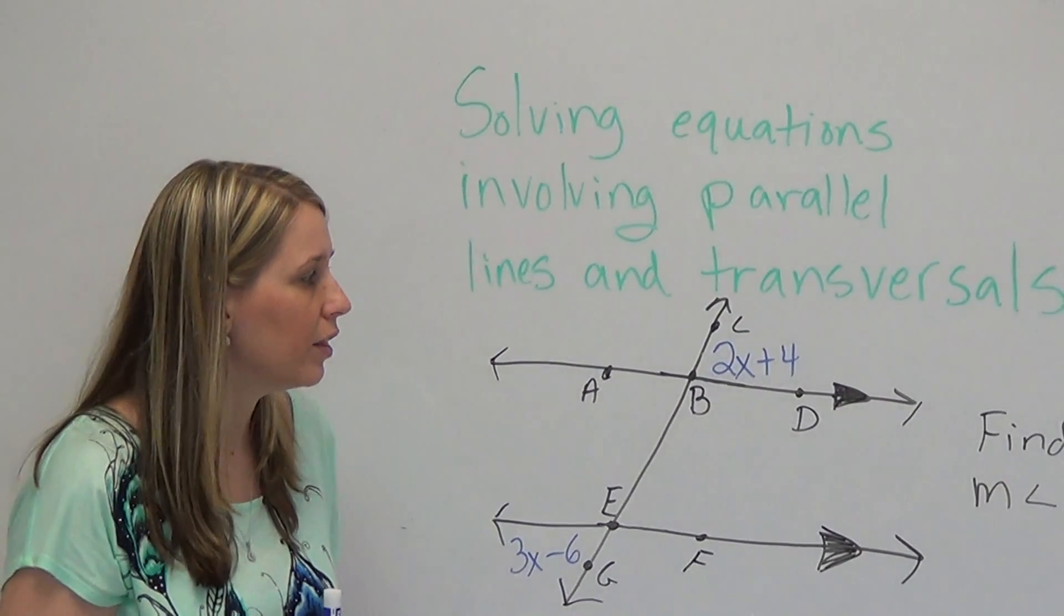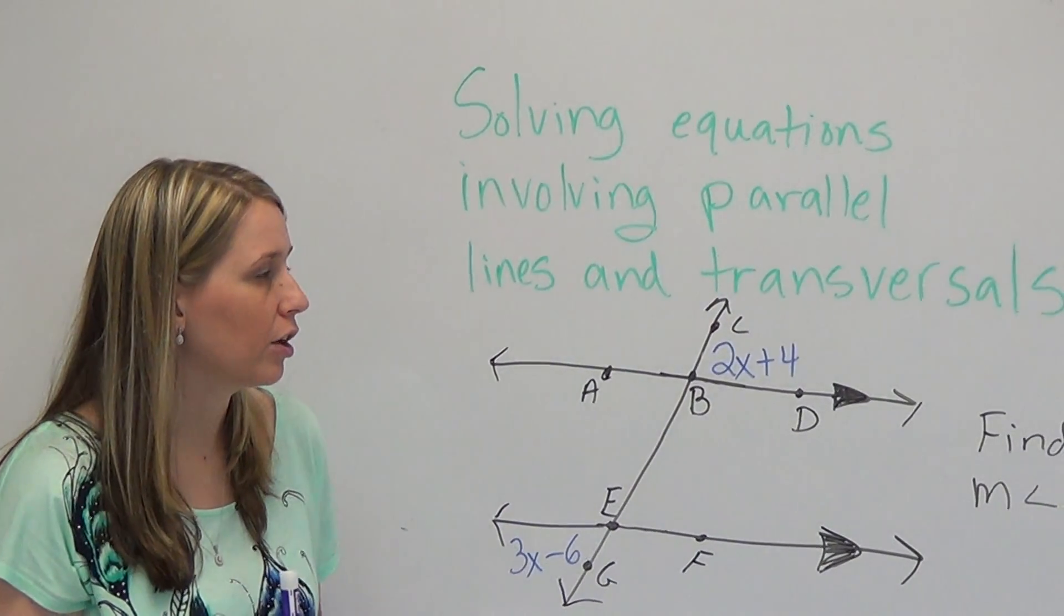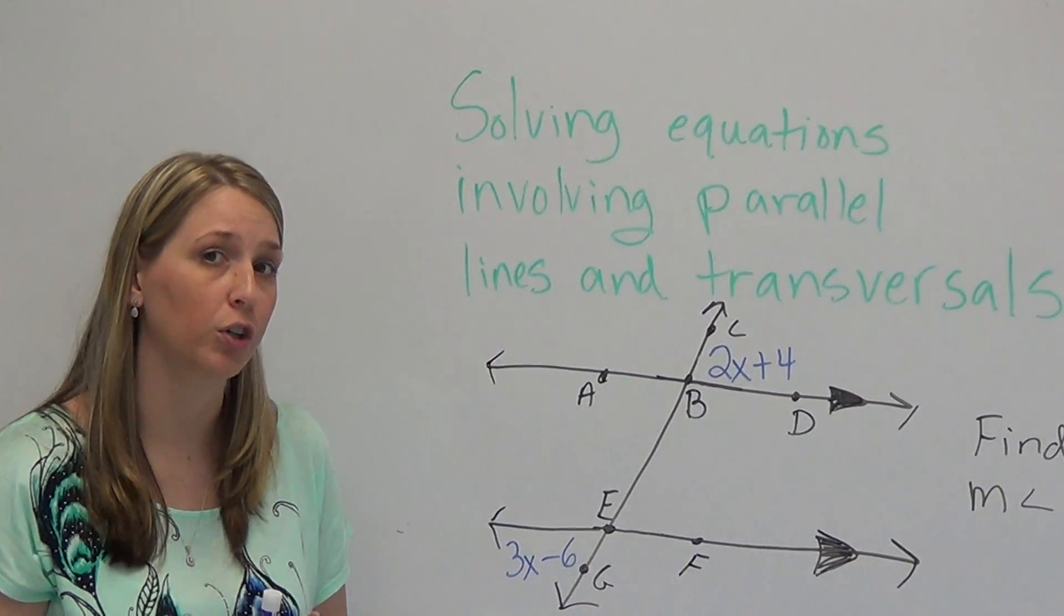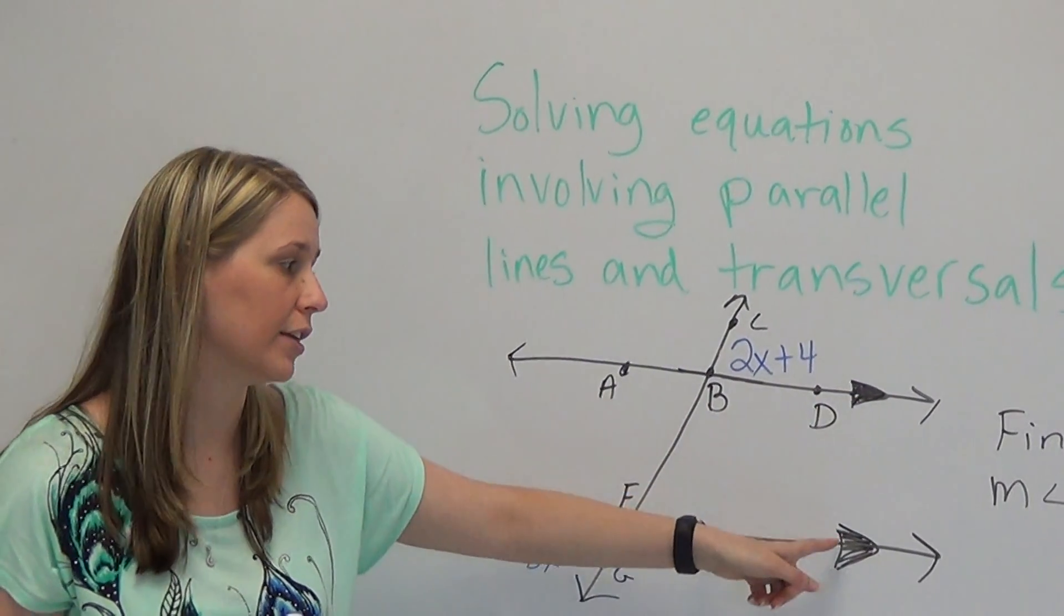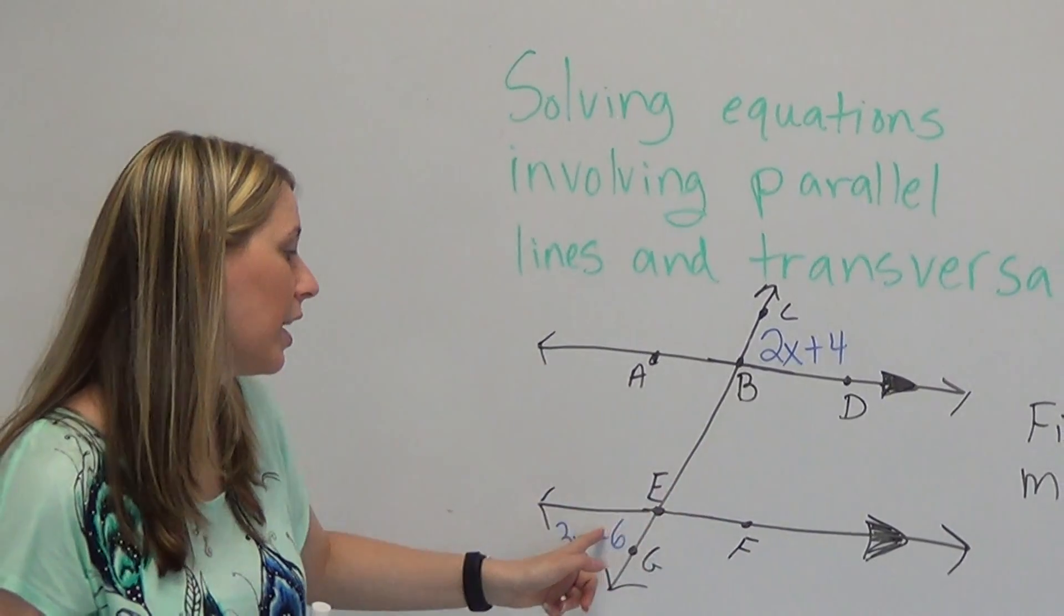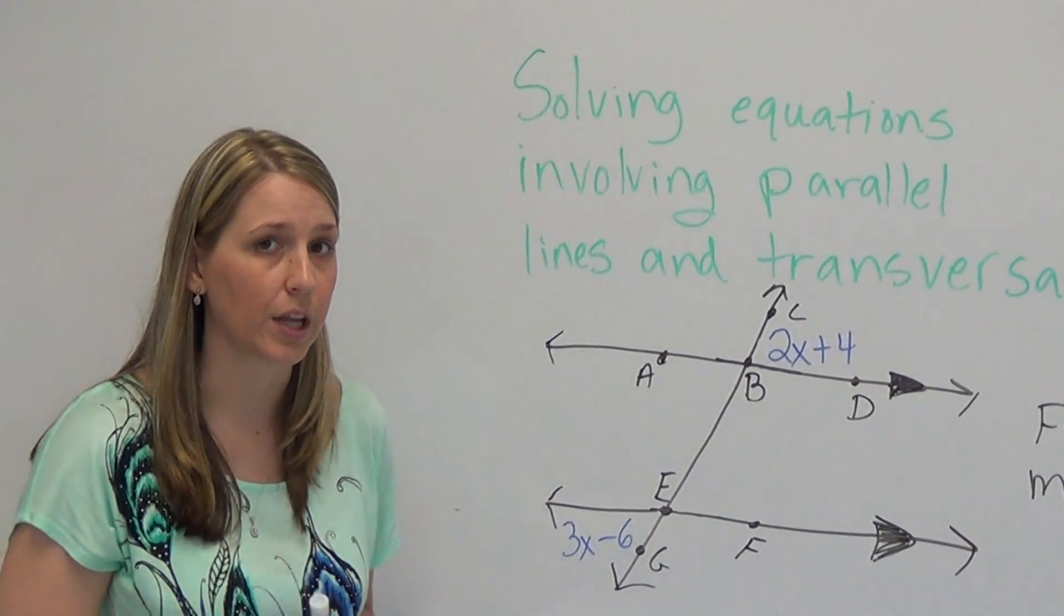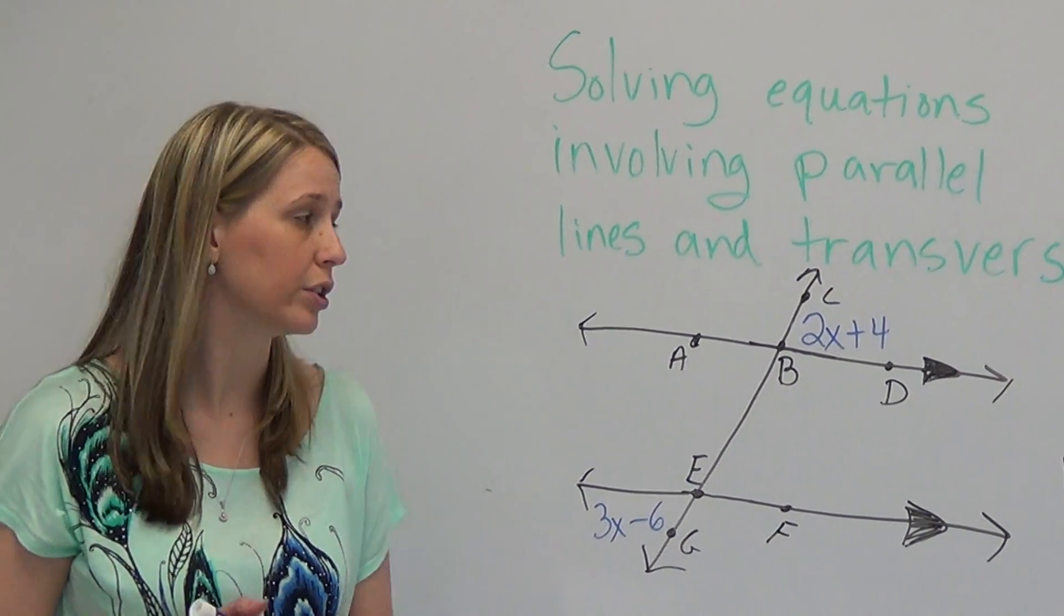And we learned in our video that alternate exterior angles are congruent as long as your lines are parallel. As you can see the lines are parallel, that means these angles are congruent so we can just set the equations or expressions equal to each other.